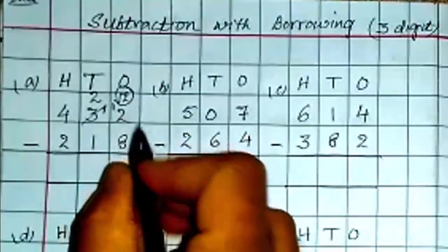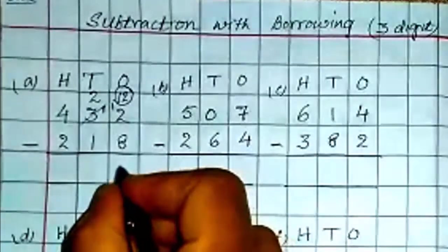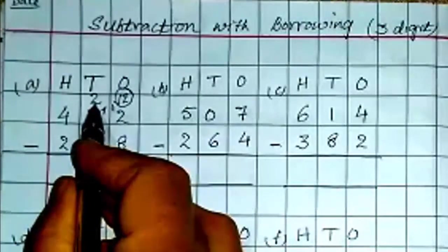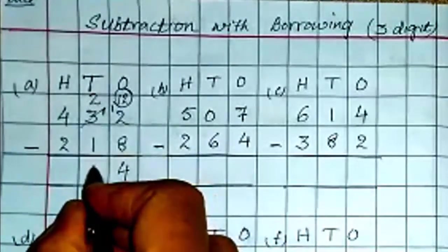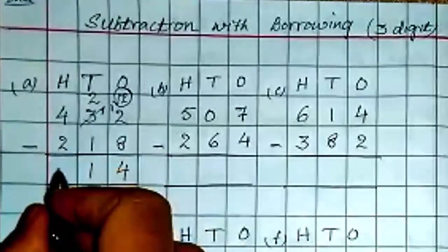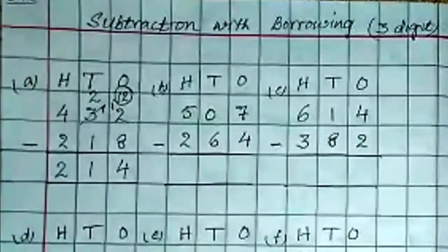Then, after 8 till 12, how many? After 8, 9, 10, 11, 12. 4 are left here. Here on tens place you have 2. 2 minus 1 is 1. On hundreds place you have 4. 4 minus 2 is 2. Is it clear?